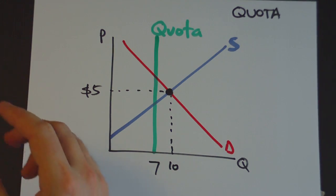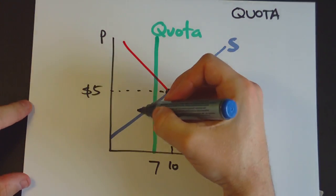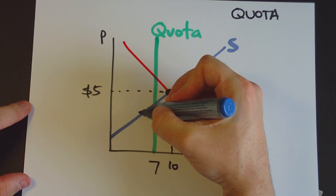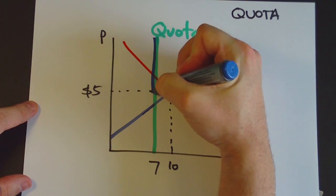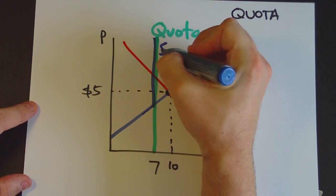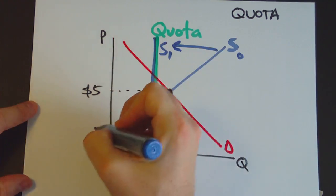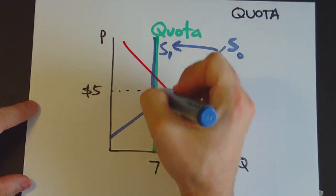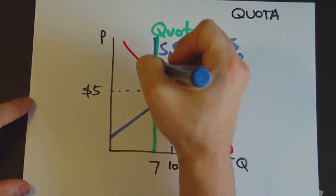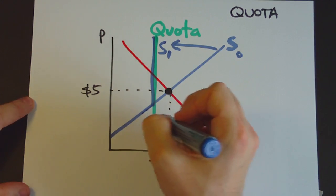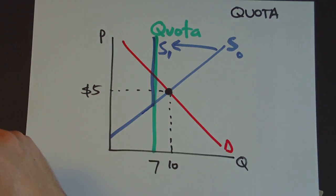So what happens to the supply curve in this situation? Well, it would normally be there, but what happens is that the supply curve will then end up going vertical here. The supply curve moves up to go vertical at the quota because they're now not able to supply any more than 7 items to the market.